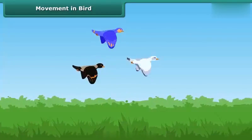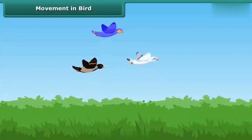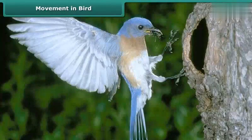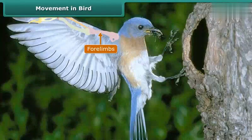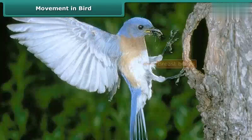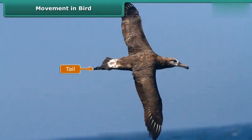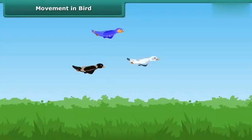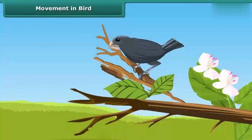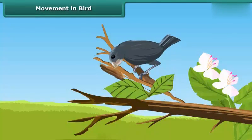A bird has a body best suited for flying. Its wings are actually modified forelimbs, and birds can fly easily with the help of these bony forelimbs. Birds have light and hollow bones. The breast bones hold the muscles of flight that help them flutter their wings. The tail controls the direction of flight. Birds have very strong shoulder bones and do not have a urinary bladder, which helps them fly easily. They can walk and perch on trees with the help of their hind limbs.